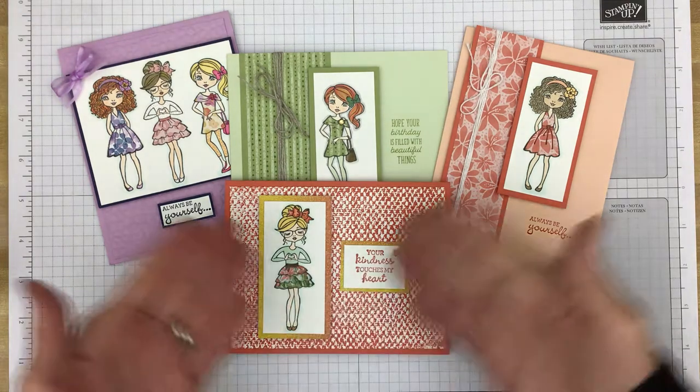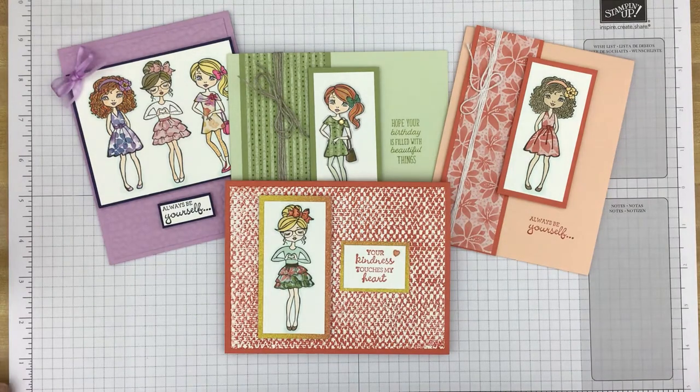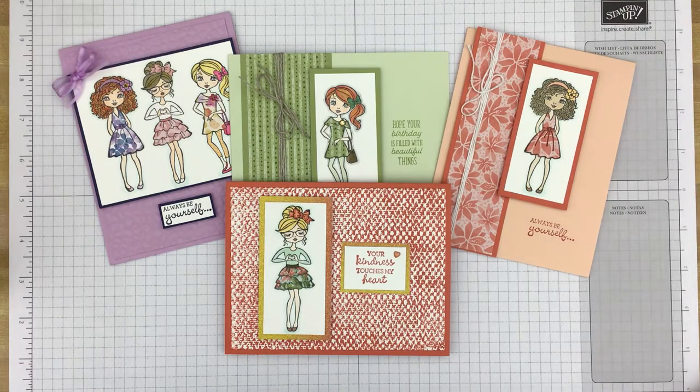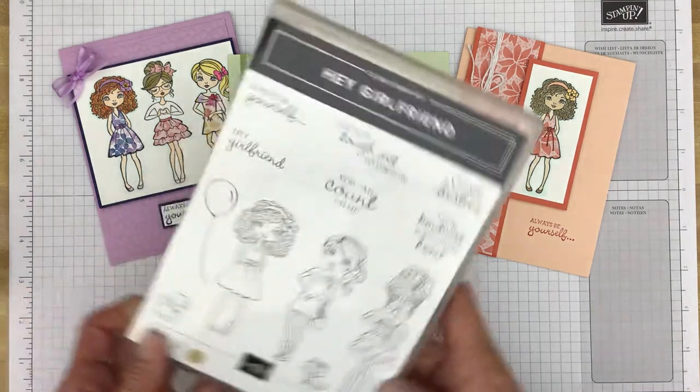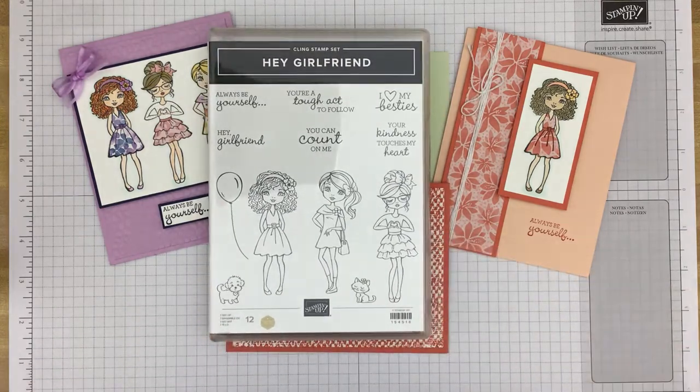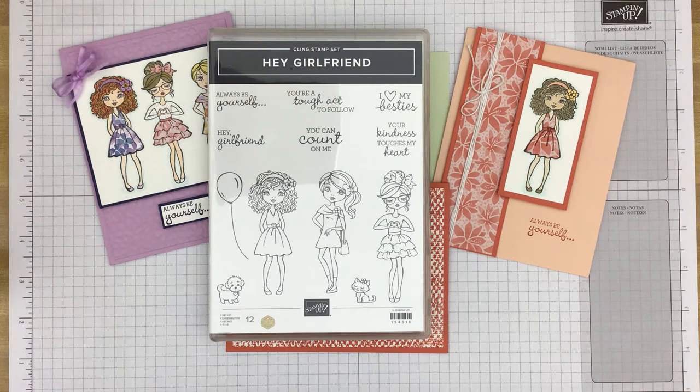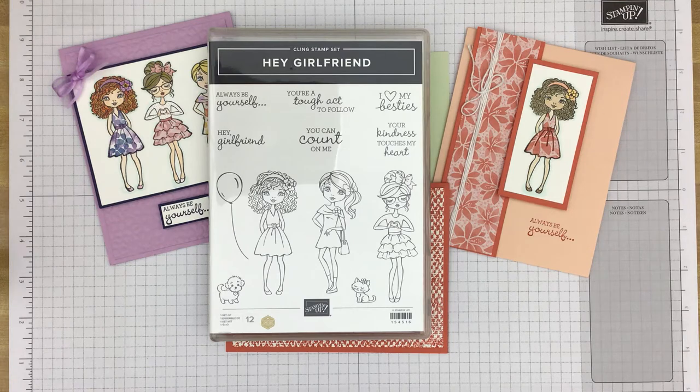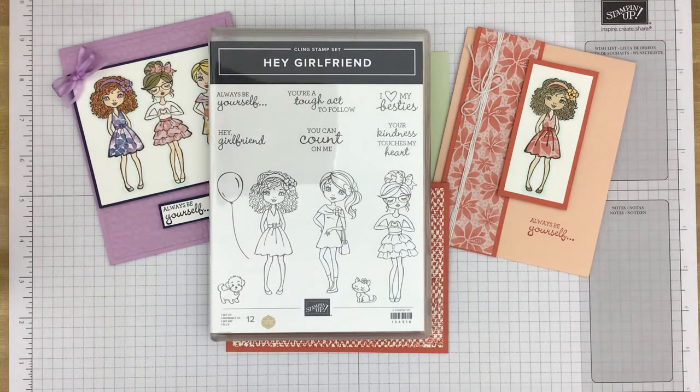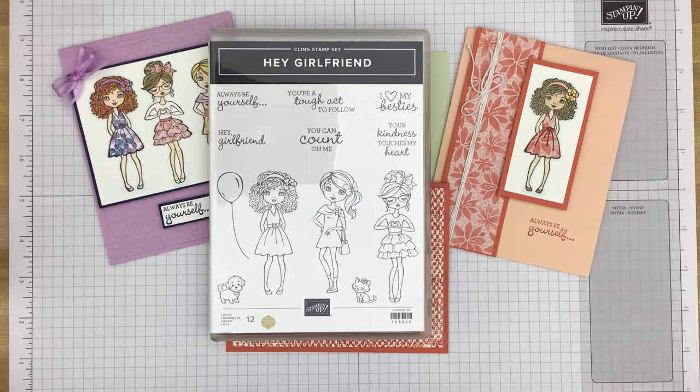We're going to look at some cards that would be nice for all the young ladies in your life and maybe even some of the older ladies. These cards were all made with the stamp set called Hey Girlfriend, found in the Stampin' Up January through June 2021 mini catalog. Sad to say this stamp set will be retiring at the end of June, but you still have time to get your hands on it.